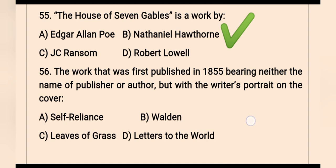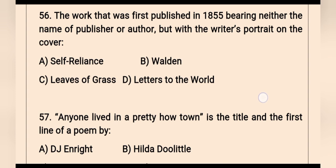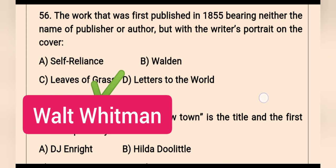Question 56: The work first published in 1855, bearing neither the name of publisher nor author but with the writer's portrait on the cover — the right option is Leaves of Grass. Leaves of Grass was first published in 1855, bearing neither the name of publisher nor author but with the writer's portrait on the cover. Leaves of Grass is a poetry collection by Walt Whitman.